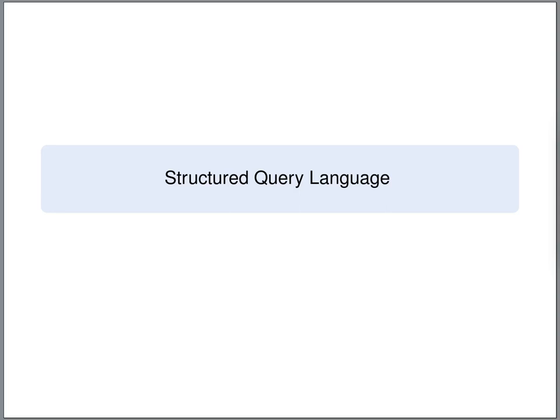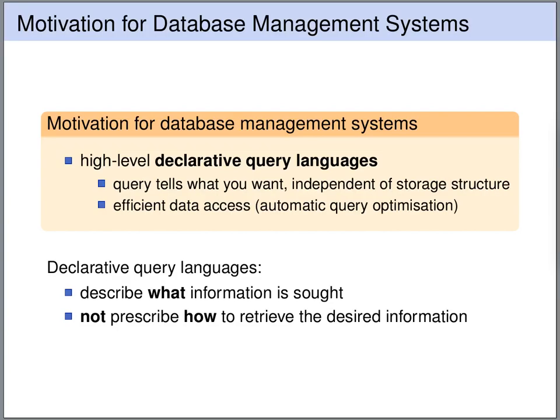One of the important features of databases is that they provide a convenient query language for querying and manipulating data. For relational databases, the main query language is the Structured Query Language, SQL. Database management systems provide high-level declarative query languages — they are elegant in the sense that we only describe what information we want, not how it is retrieved. We do not need to care about optimizations or index structures. The efficient access is purely the task of the database management system, which takes the high-level declarative query and decides on its own how to execute it in the most optimal way.